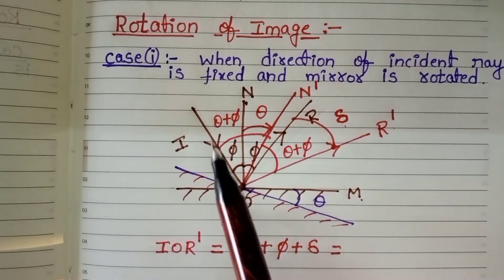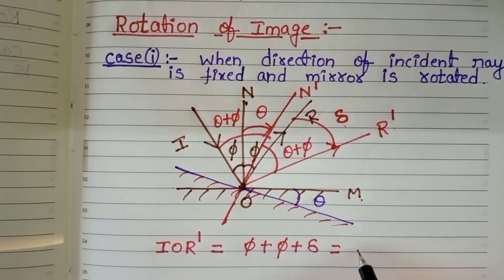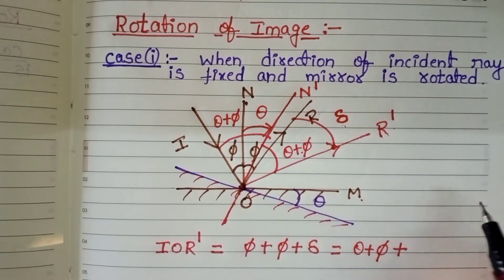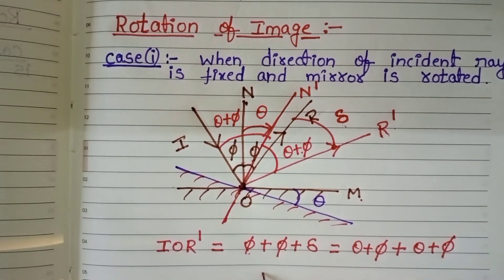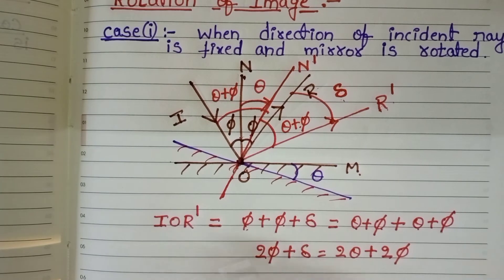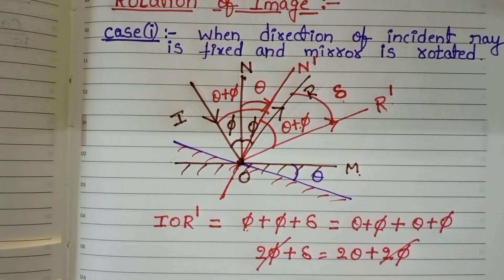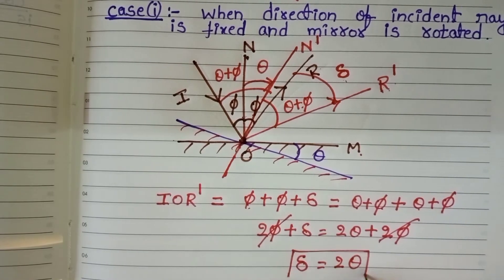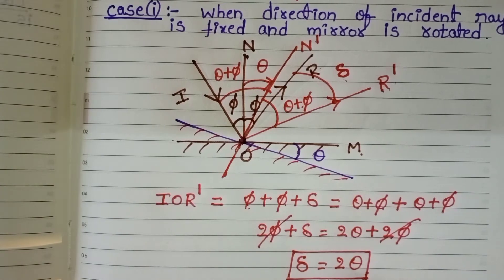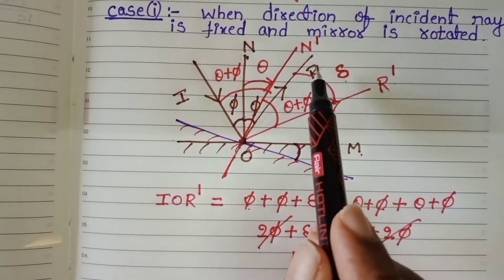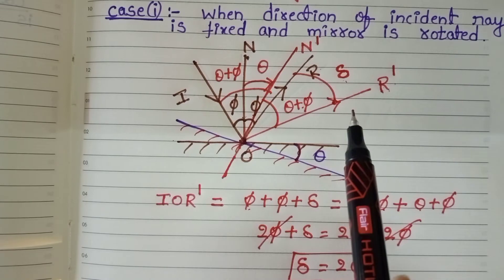So, phi plus phi plus delta, and in another way, angle I O N dash is theta plus phi, plus theta plus phi. Now simplify this: phi plus phi gives 2 phi plus delta, and theta plus theta gives 2 theta plus phi plus phi gives 2 phi. On both sides, 2 phi gets cancelled. Then, delta is equal to 2 theta. The angle of rotation of the reflected ray is 2 theta — it is double the angle of rotation of the plane mirror. When the plane mirror is rotated through an angle theta, the reflected ray also rotates in the same direction. But the angle of rotation of the reflected ray is 2 theta. If angular velocity of the plane mirror is omega, then angular velocity of the reflected ray becomes 2 omega in the same direction.